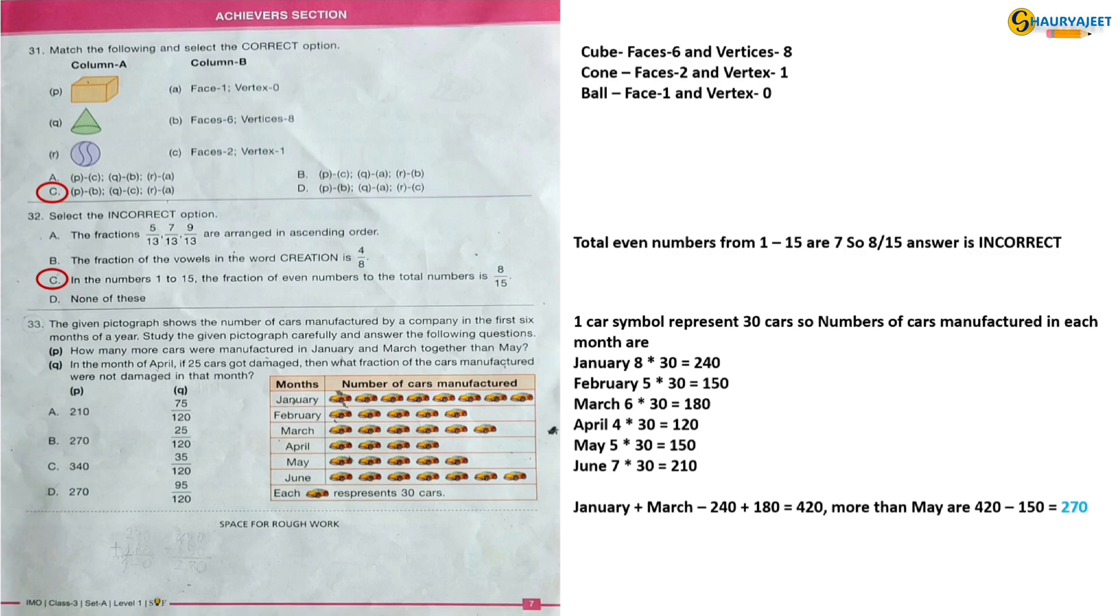Next sub-question: In the month of April, if 25 cars got damaged, then what fraction of the cars manufactured were not damaged in that month? The total number of cars manufactured in April were 120. Damaged cars in April were 25. So 95 not damaged cars. Final answer in fraction will be 95 by 120. So the correct option is option D.